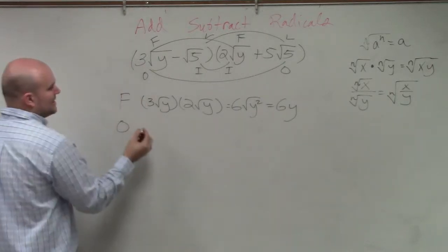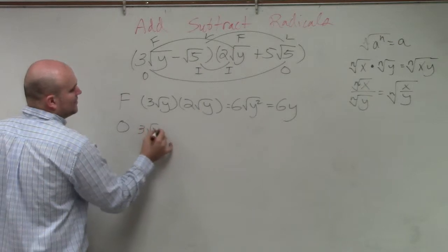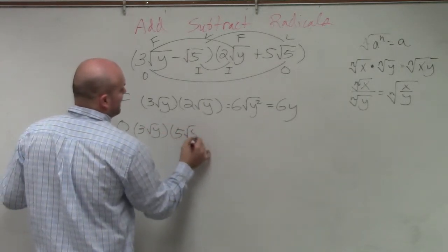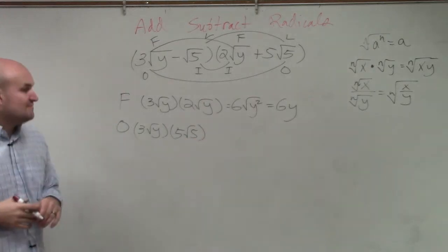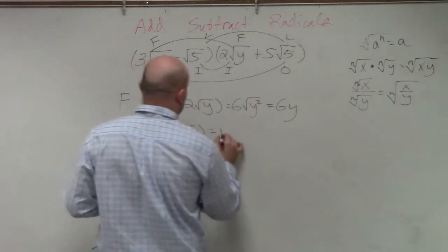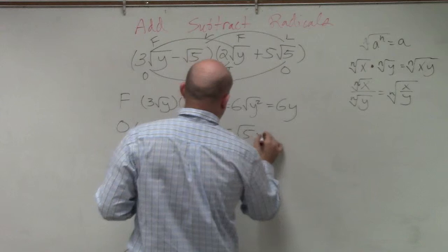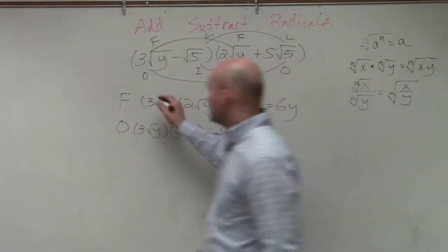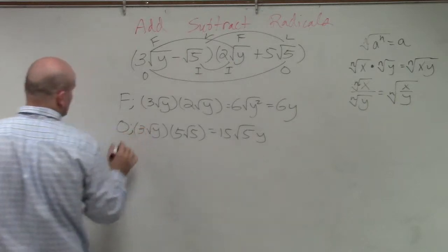O is going to be the outer. So that's going to be 3 square root of y times 5 square root of 5. Well, 3 times 5 is going to be 15 times the square root of 5y. I should probably put like some columns there.